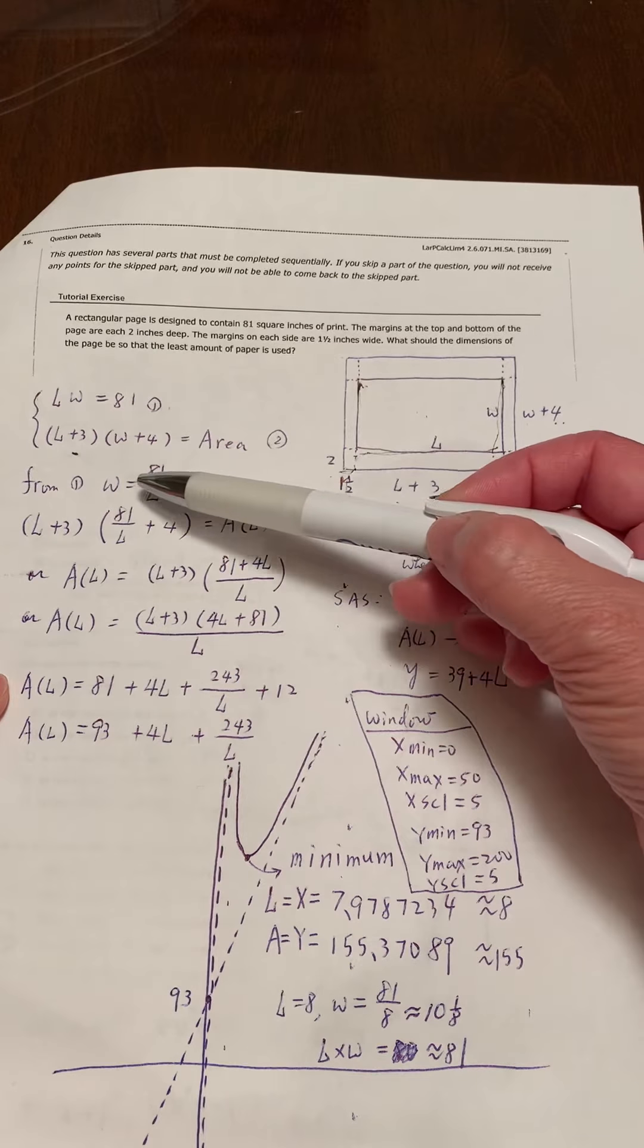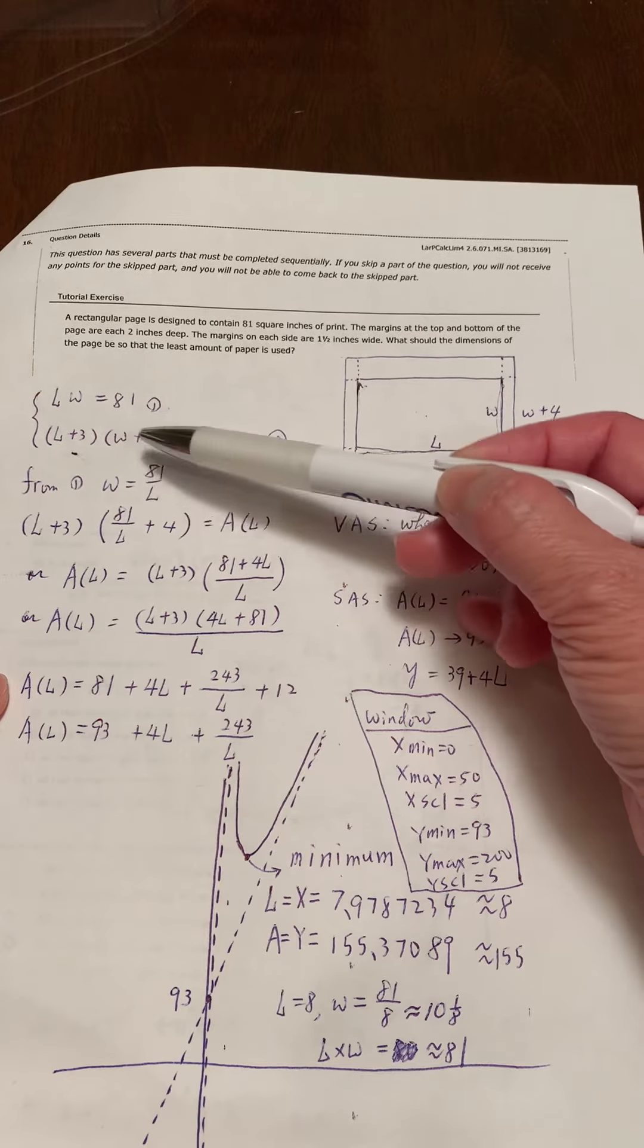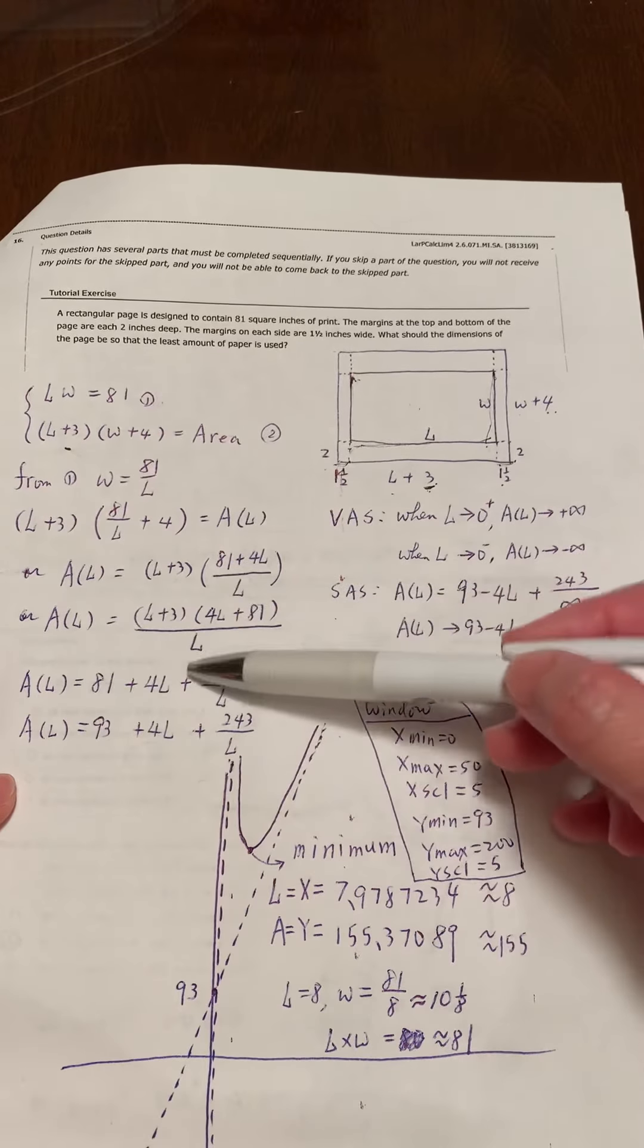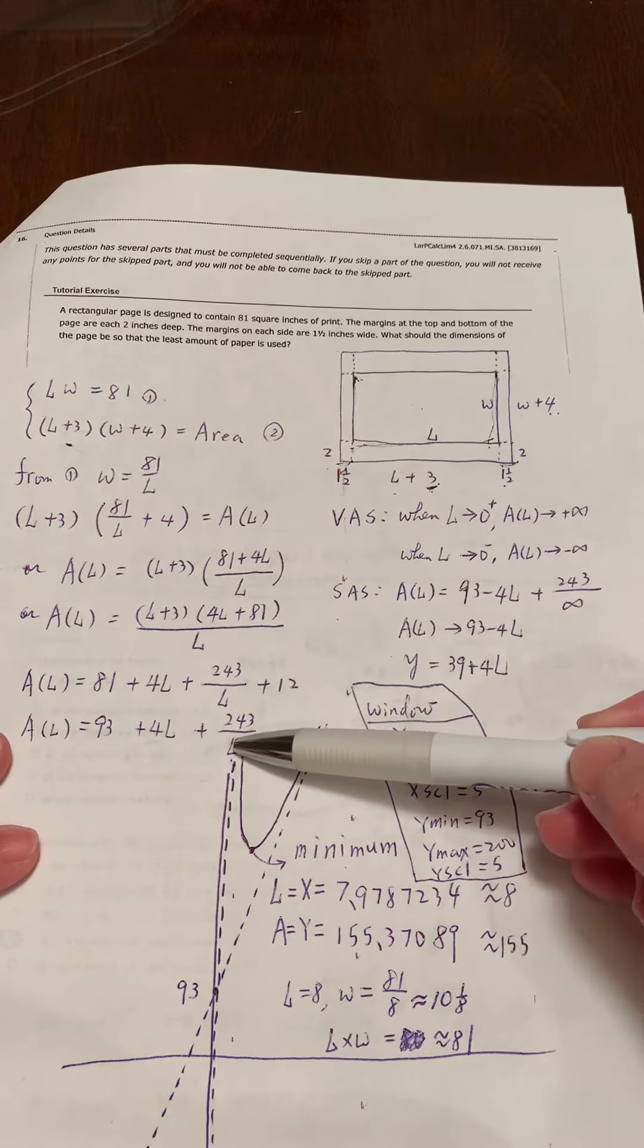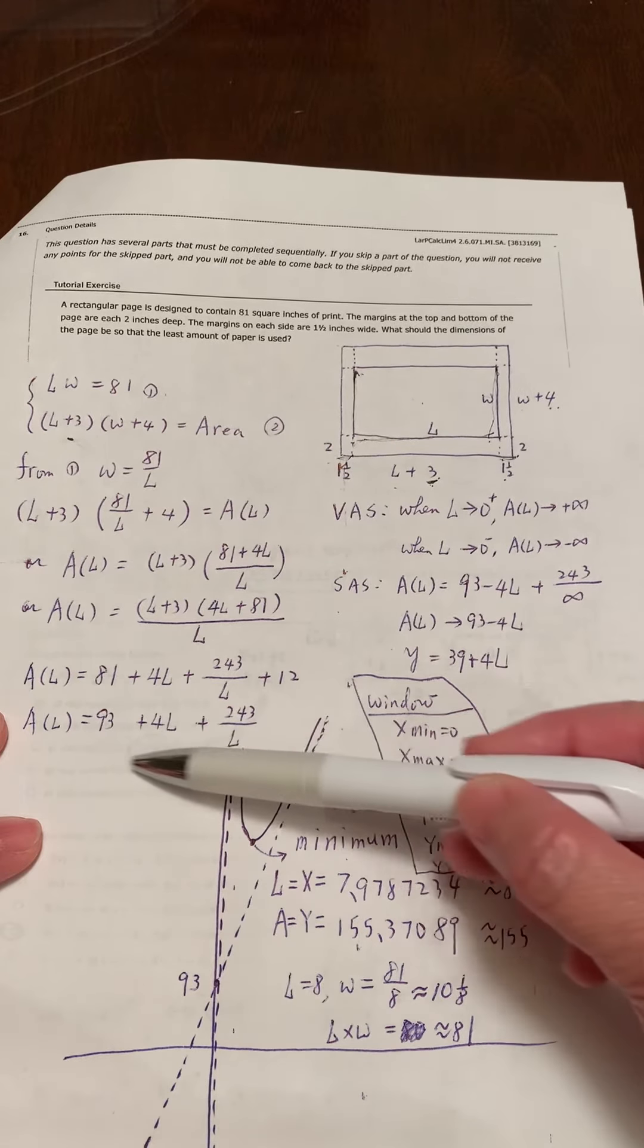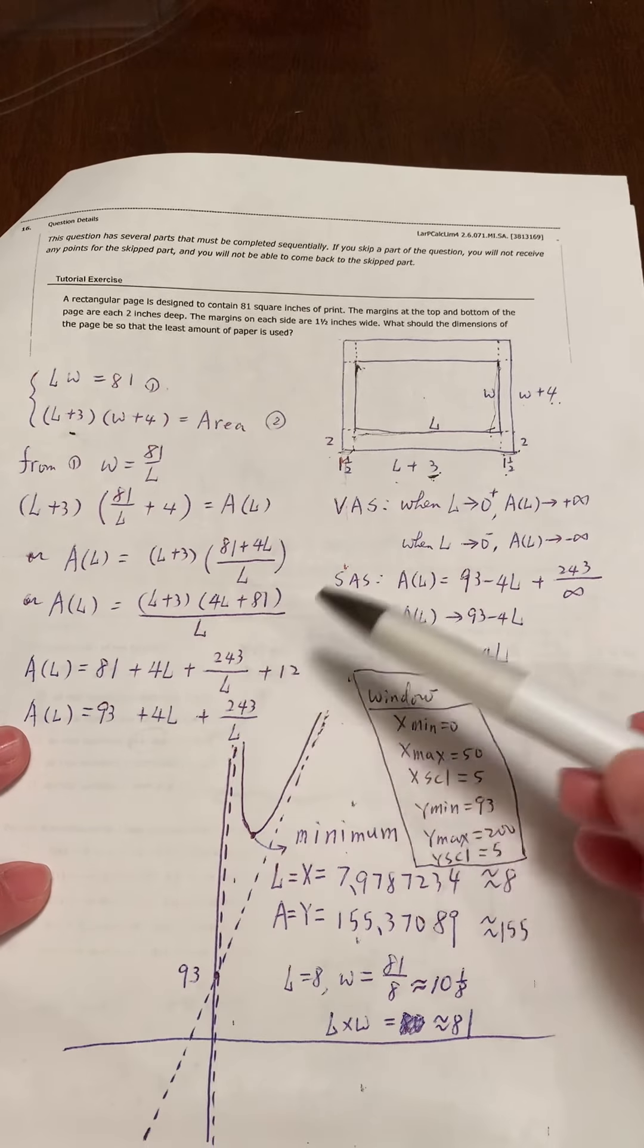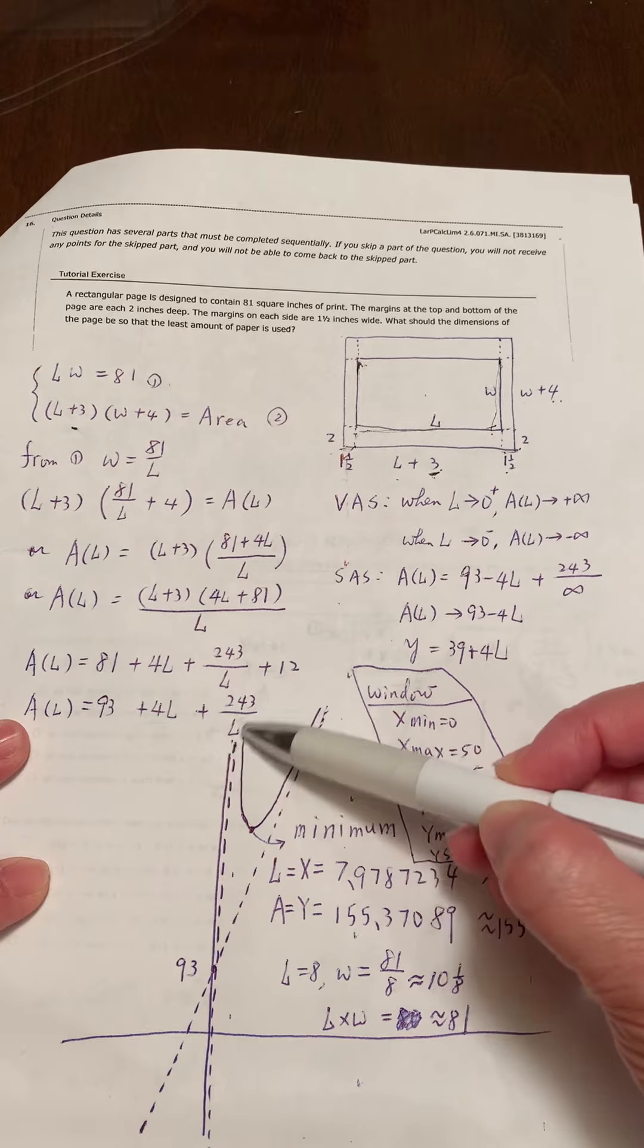How to eliminate one unknown number? You solve for one data in terms of the other. Right now I try to eliminate w, so from number one I have this. Then I plug in 81 over l to replace w. So I have this function. After simplifying, you end up with a function like this with one denominator.